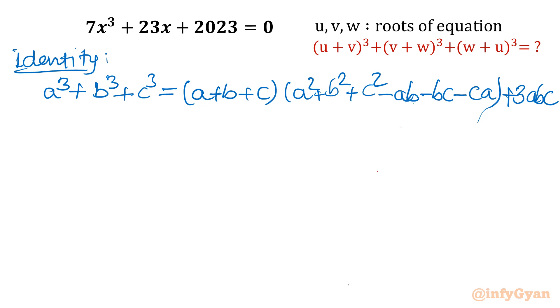Now task is very easy. See u + v + w, that would be 0. If sum of roots is 0, that means this term would be 0. So what is left? 3abc. What is our left hand side? a³ + b³ + c³. So let me write in terms of cubes.